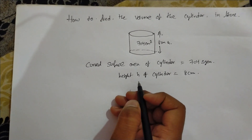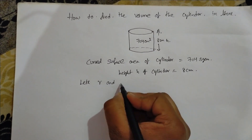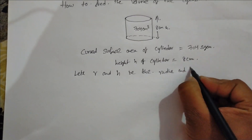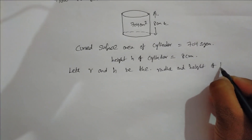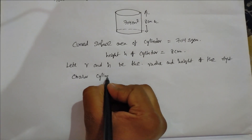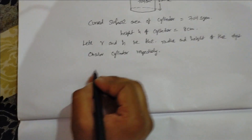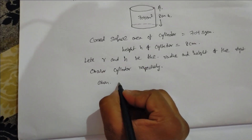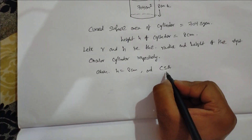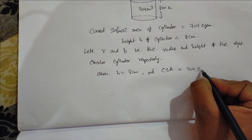So to find the volume of a cylinder in liters, first we have to know the radius of the cylinder. Let R and H be the radius and height of the right circular cylinder respectively. So first we have to find the R value. Given: H is equal to 8 centimeters and curved surface area of the cylinder is equal to 704 square centimeters.